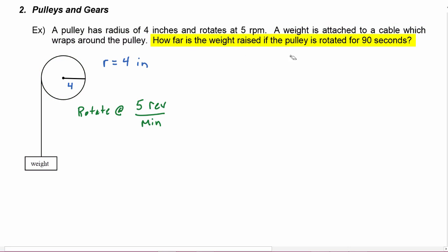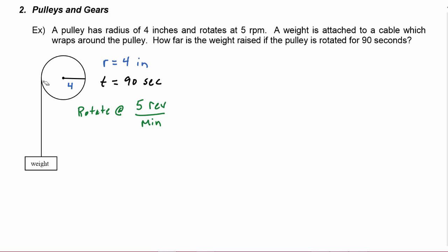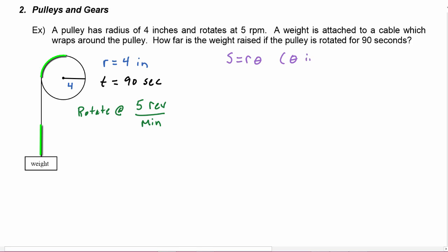How far is the weight raised if the pulley is rotated for 90 seconds? We have a unit of time of 90 seconds. As the pulley rotates and pulls the cable, whatever distance the cable travels around the pulley will be the same distance the weight moves up — the height the weight moves and the arc length around the circle are going to be the same. We know we have an equation for arc length: s equals r times theta, where theta has to be in radians.